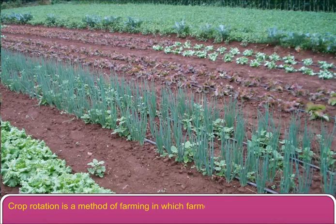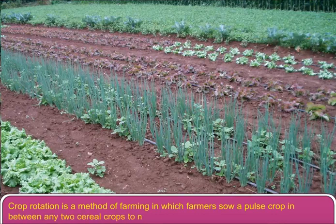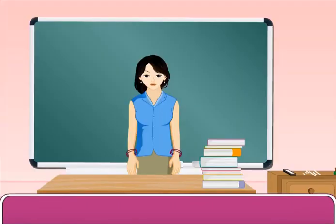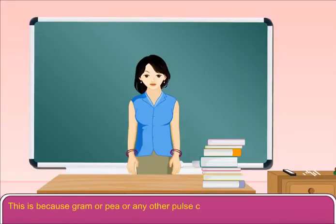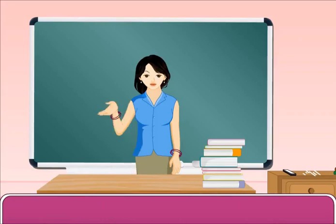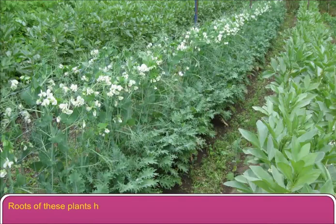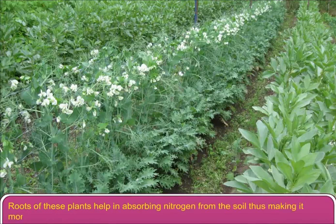Crop rotation is a method of farming in which farmers sow a pulse crop in between any two cereal crops to maintain the fertility of the soil. This is because gram, pea, or any other pulse crop has the property to improve the fertility of the soil. The roots of these plants help in absorbing nitrogen from the soil, thus making it more fertile.